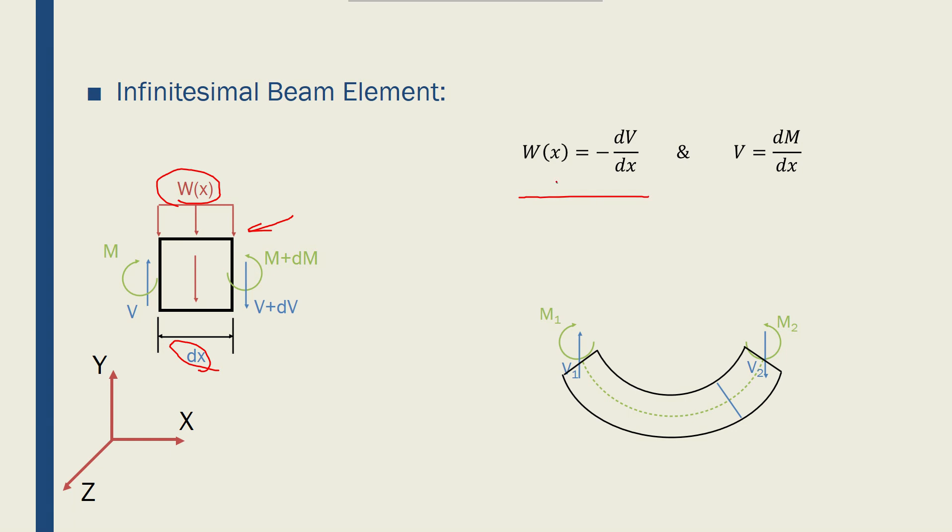The relationship between the distributed force w(x) and shear force V, so w(x) is equal to minus dV/dx, which is the derivative of shear force with respect to x, the distance along the length of the beam. And then we set that V is equal to dM/dx, which is the derivative of moments with respect to x, again the distance along the length of the beam.